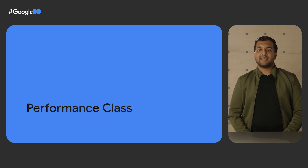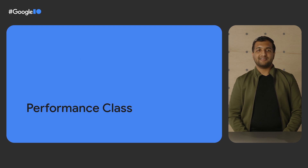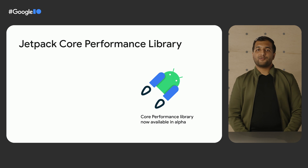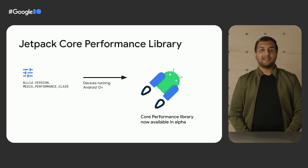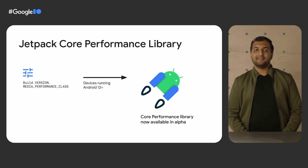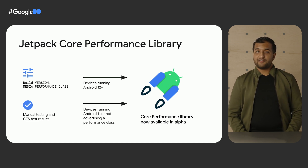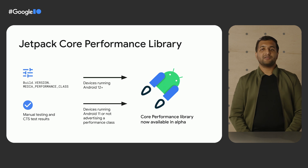We first discussed Performance Class last year — a device property that reflects a device's level of performance and overall capabilities to help developers classify devices. The requirements to meet a certain performance class rating are specified in the Android Compatibility Definition document and verified by the Android Compatibility Test Suite. Recently, we introduced the new Core Performance Library as part of Jetpack. This library will be the best way to obtain a device's performance class in order to tailor your app's user experience accordingly. For devices running Android 12 and above, the library will first check for the Media Performance Class advertised by the Build API. For devices running Android 11 or those not advertising a performance class, this library will instead report the property based on device certification test results or additional manual testing done by Google.